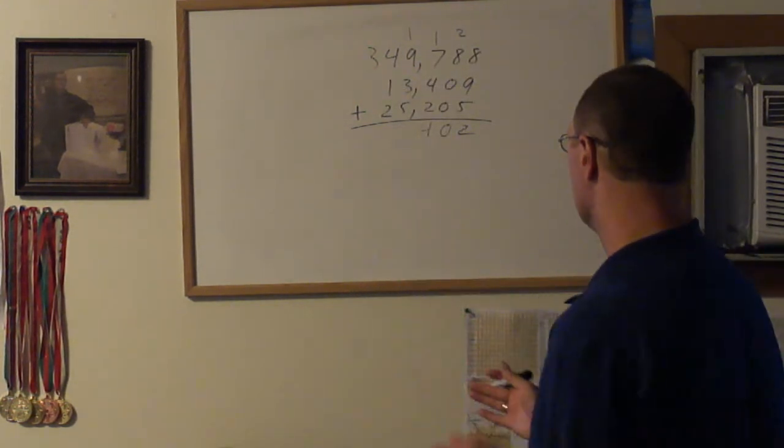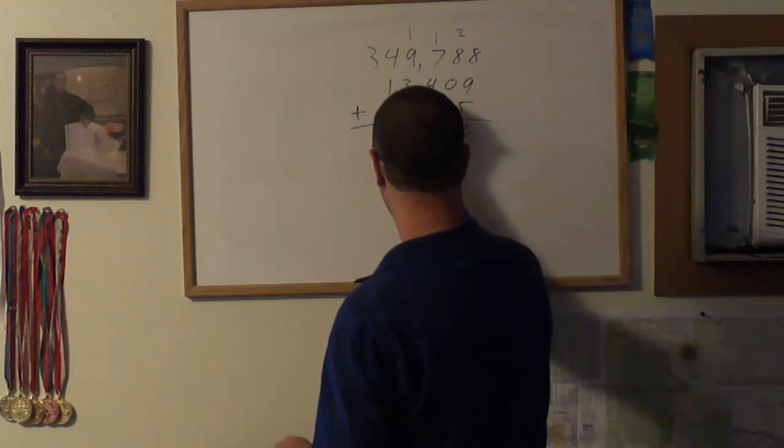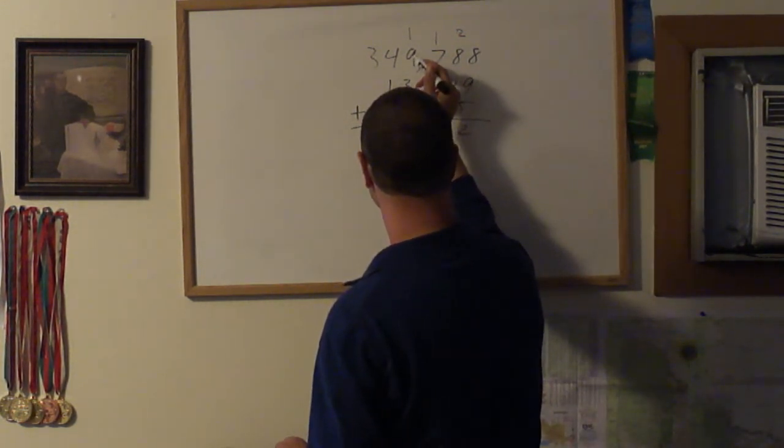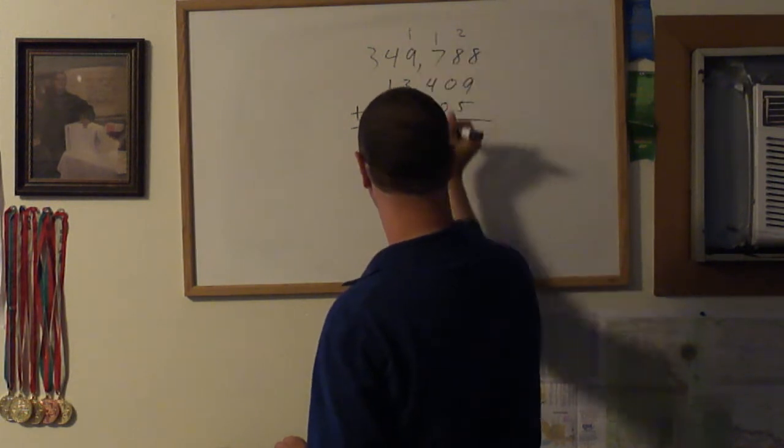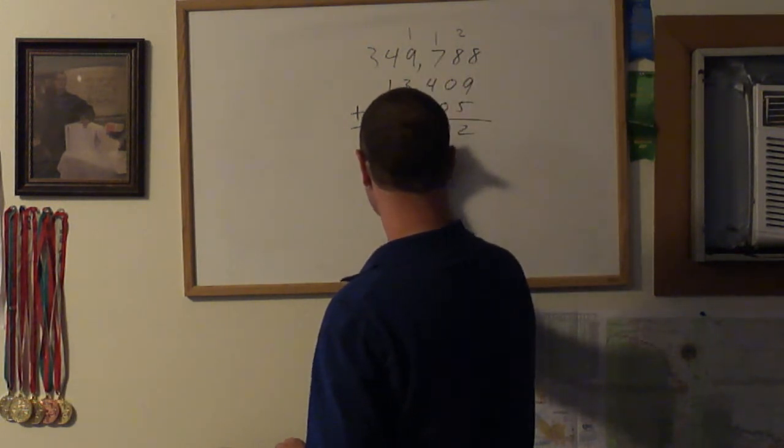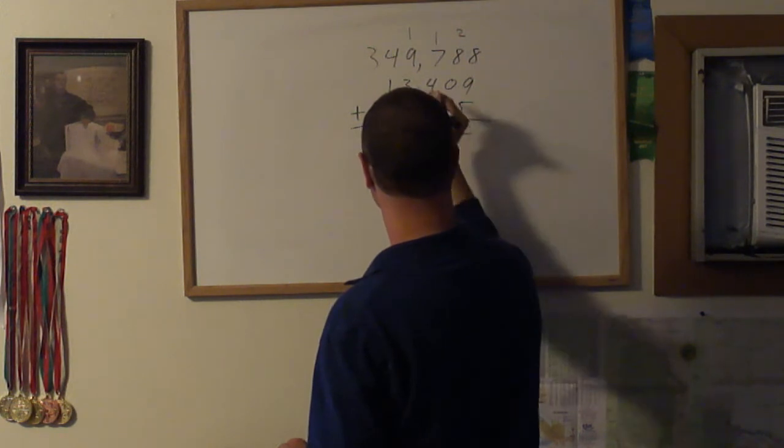Alright, we're getting going here. 3 plus 5 equals 8, plus 9 equals 17. 8 plus 1 equals 18.